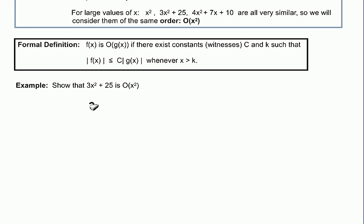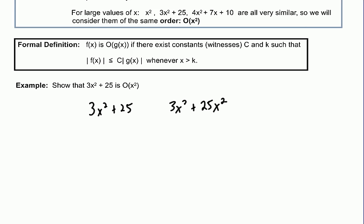So let's think about the function 3x²+25. What would happen if we bumped that 25 up to 25x²? Basically we're going to bring every term in the initial polynomial up to the highest degree. How do you think these two would compare? 3x²+25 compared to 3x²+25x².